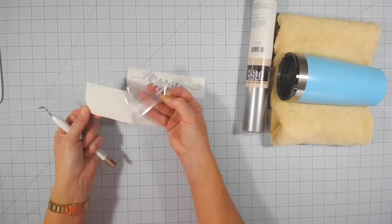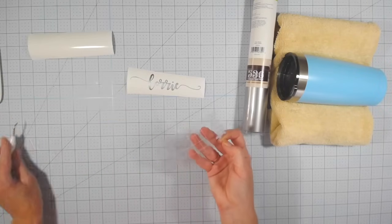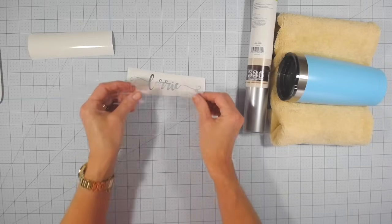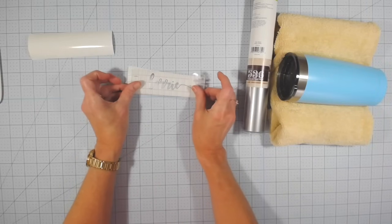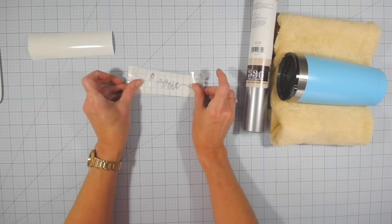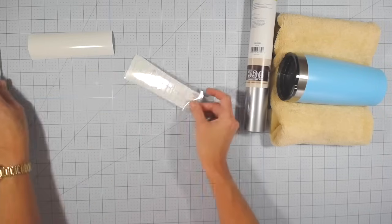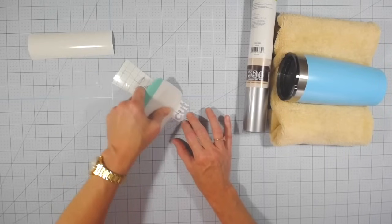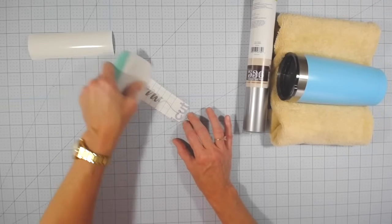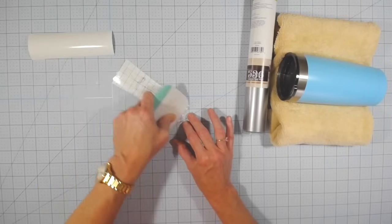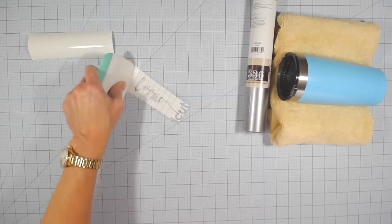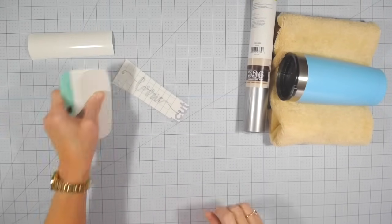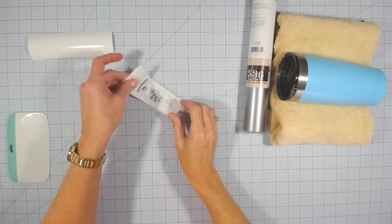So you're just going to peel those apart and this Cricut transfer tape has the grid lines on it which I love that helps keep things nice and straight. And then you're going to place the transfer tape sticky side down right on top of your design. Use your Cricut scraper and just burnish it by rubbing it on the front and you can flip it over and rub it on the back if you want. This just helps the vinyl stick to the transfer tape and it makes the application a little bit easier.